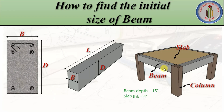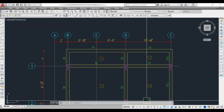Always, whenever you say beam depth, that includes the slab thickness. For example, if the beam depth is 15 inches and the slab thickness is 4 inches, that 4-inch slab thickness is included in the beam depth. I hope it is clear about the basic dimensions of the beam.